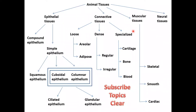Muscle tissues are divided into three types: Skeletal muscle for voluntary movements, Smooth muscle for involuntary movements, and Cardiac muscle for heart-related activities. The last type of tissue is Neural tissue, which helps in sending and receiving information to and from various parts of the body.